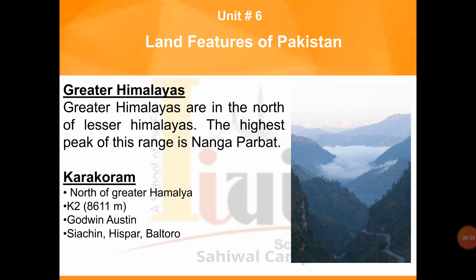The last point is the Karakoram. In the north of the Greater Himalayas, there is another range of snow-peaked mountains situated in Gilgit up to Skardu. The highest peak of Pakistan is K2, which is 8,611 meters high. K2 is also called Godwin Austin. It is the second highest peak of the world — the highest peak of the world is Mount Everest, as mentioned in the interesting information. Huge glaciers are found in this range, of which Siachen, Hispar, Baltoro, Biafo and Batura are important.